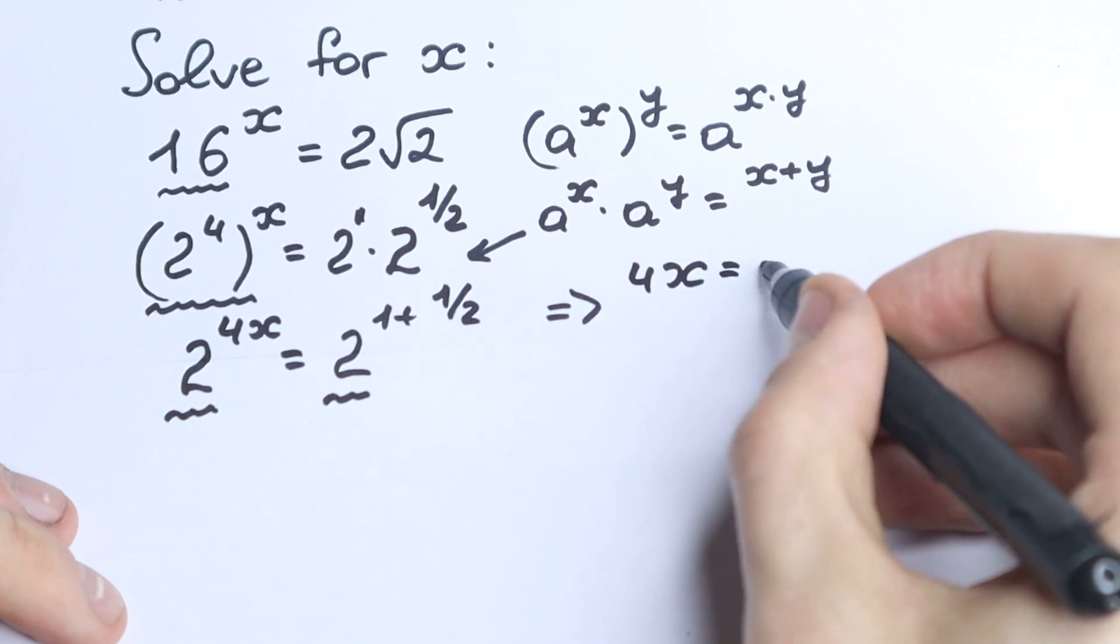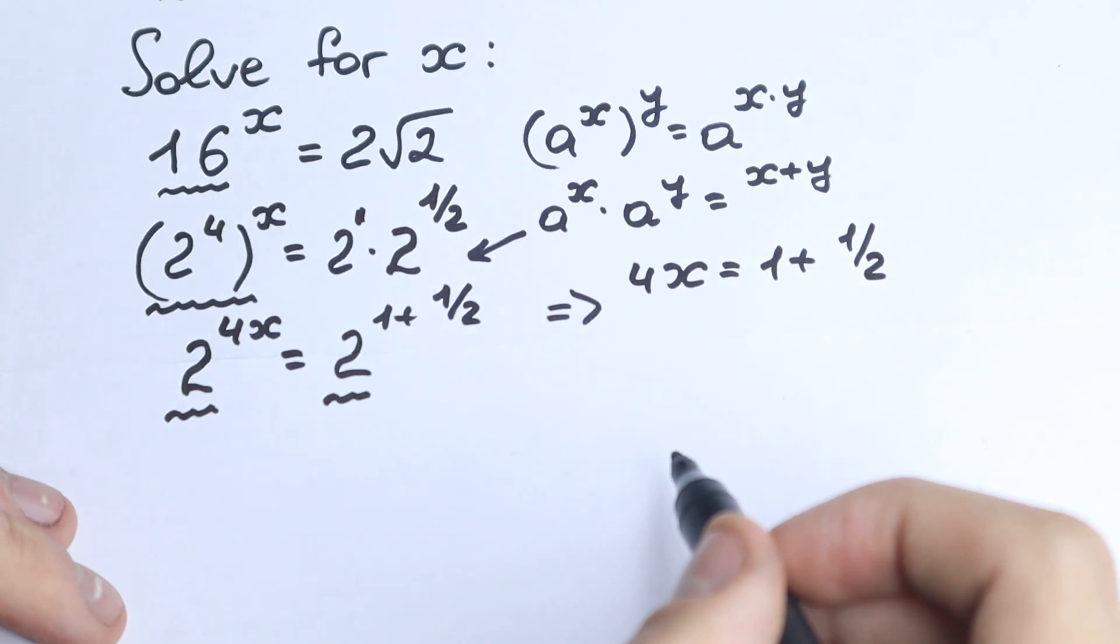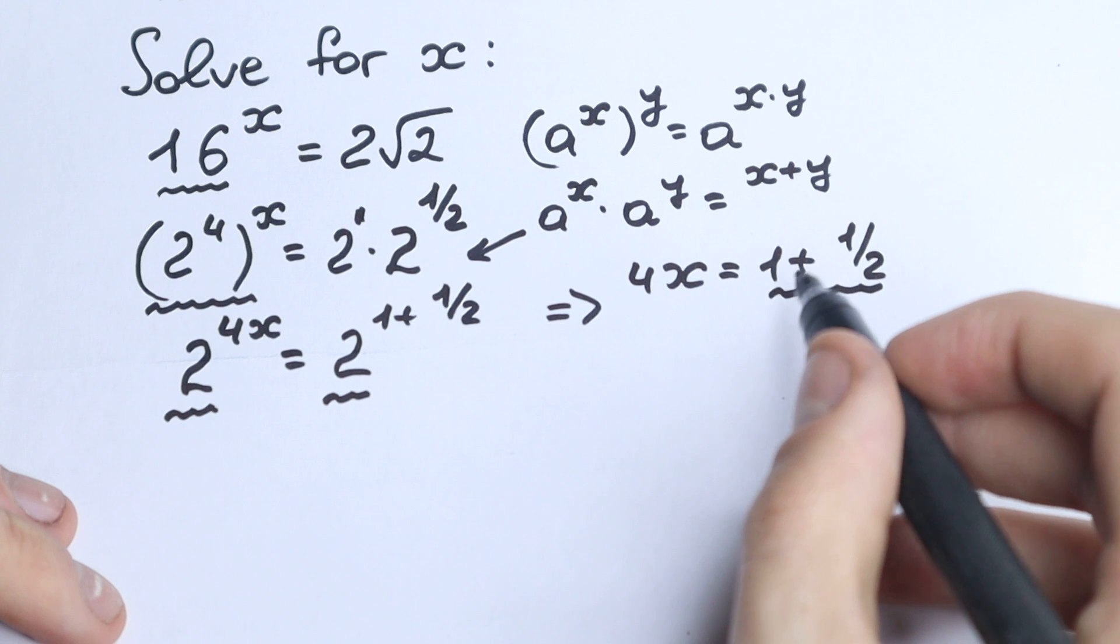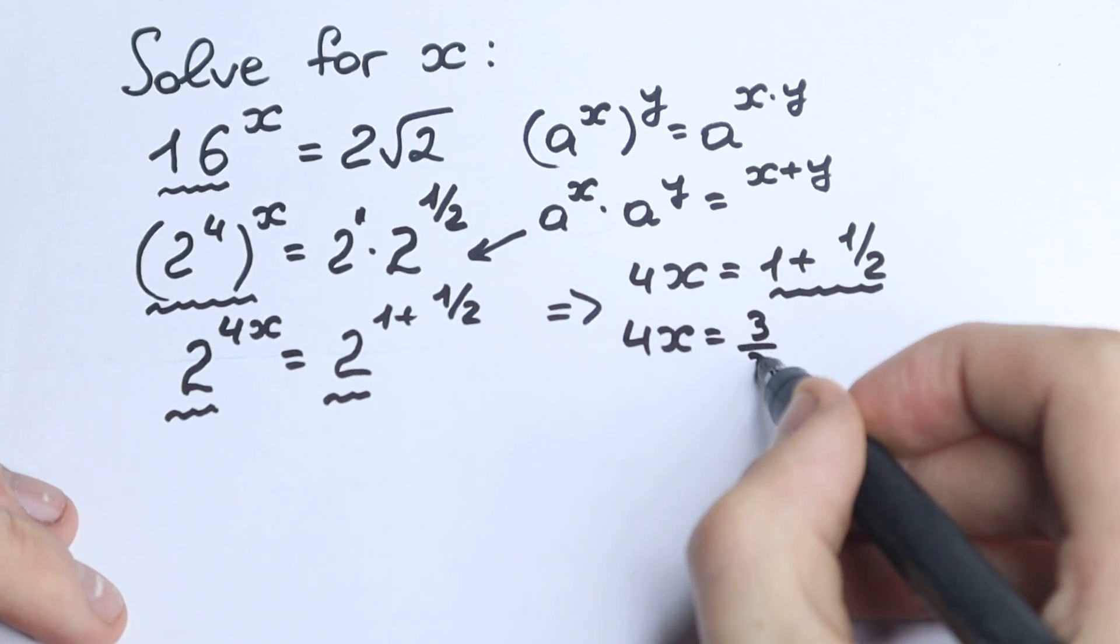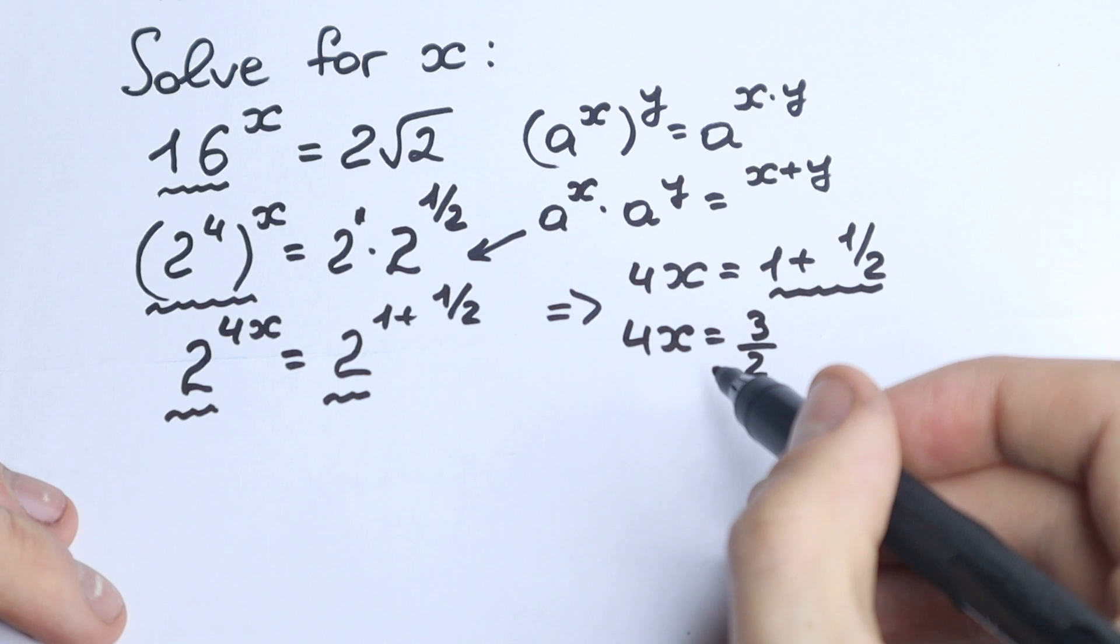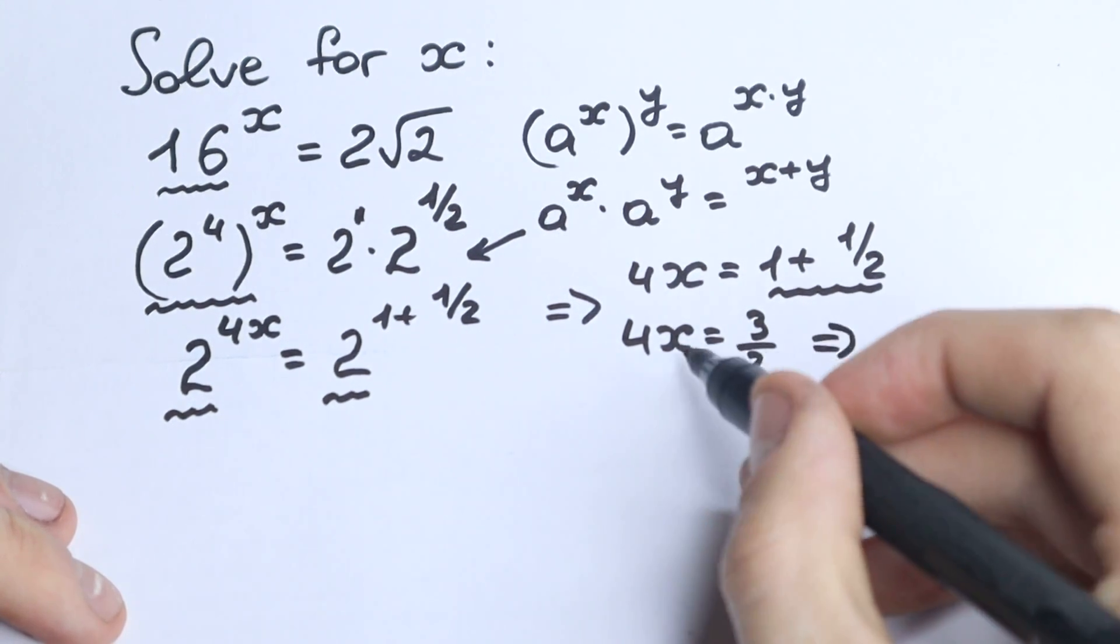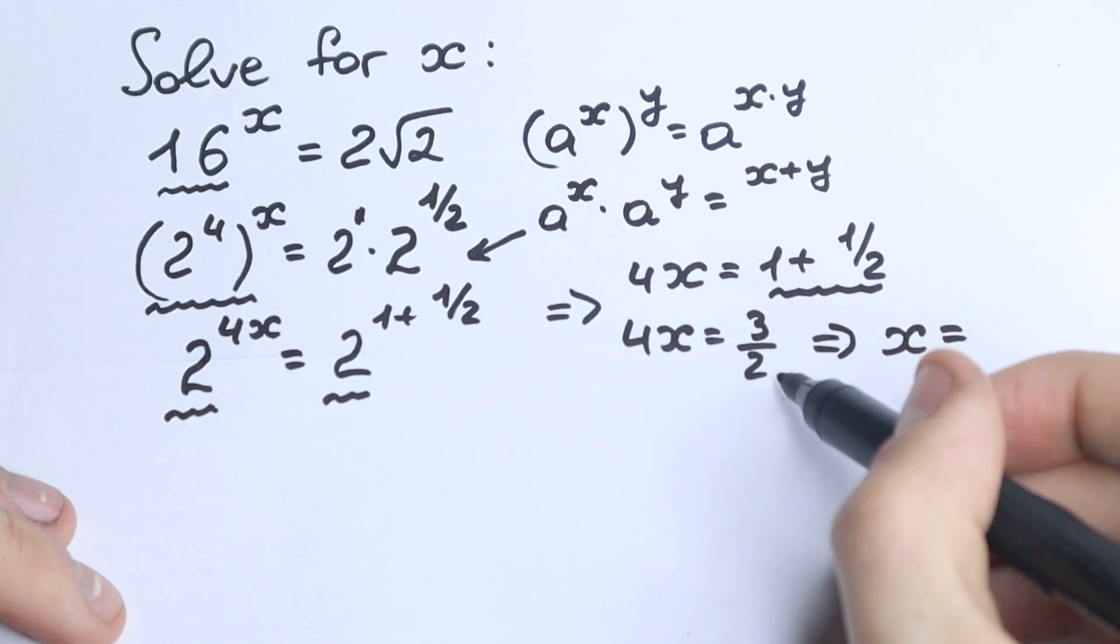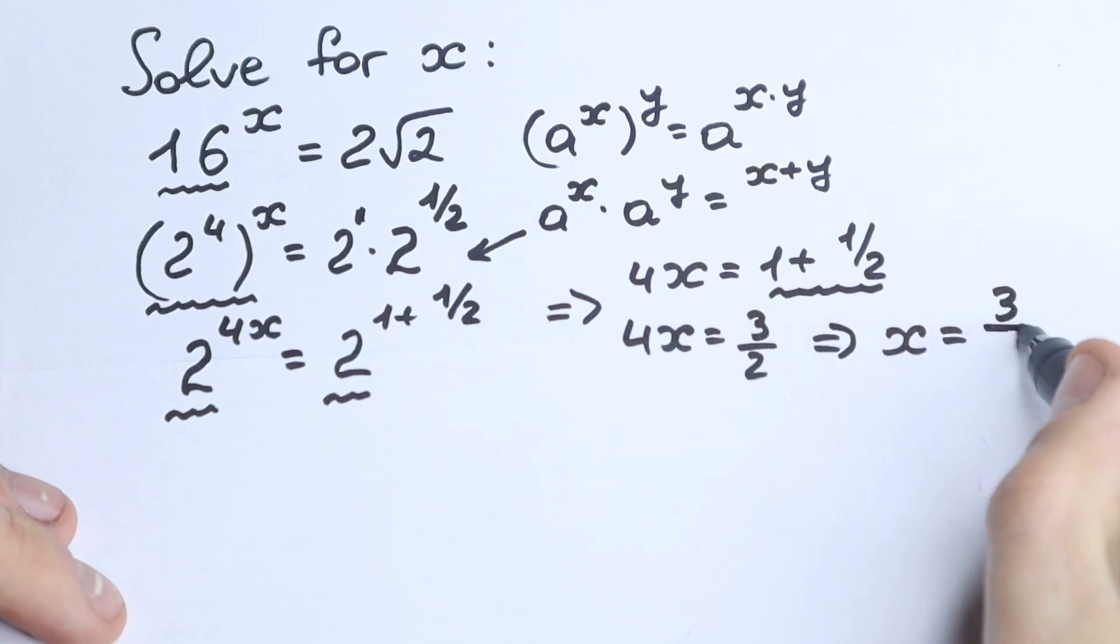So we have 4x equal to 1 plus 1 half. 4x equal to 1 plus 1 half. We know it, 1 plus 1 half, it looks like 1.5 or 3 half. So we have 4x equal to 3 half. How can we find our x? Of course, let's divide both sides by 4. And we have our x. Let's divide both sides by 4. From here we cancel this from the left-hand side. And right here we will have it. Yeah, we divided both sides by 4, so we have 3 over 8, 3 over 8.